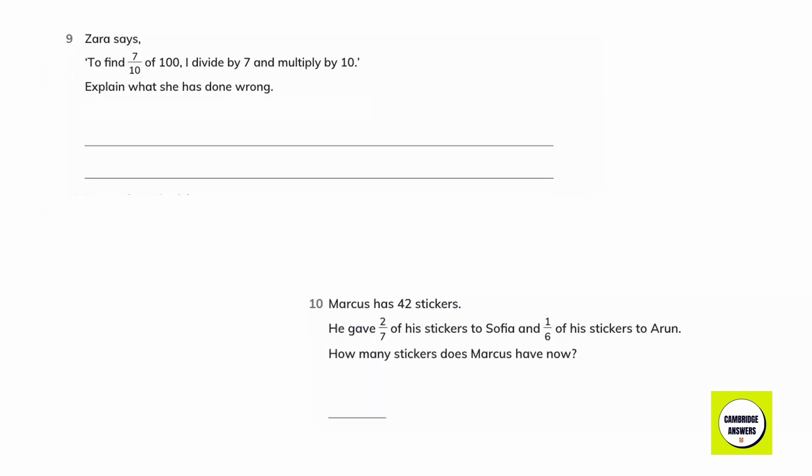Zara says to find 7 upon 10 of 100, I divide by 7 and multiply by 10. Explain what she has done wrong. Correct her statement and then find the correct answer.